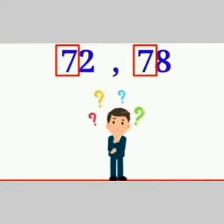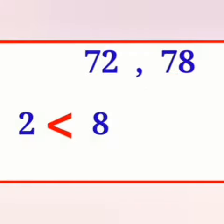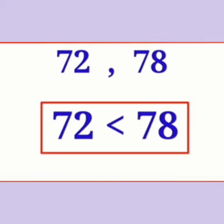If the tens digits are equal, then the number with the greater units digit is the greater number. Here, 2 units is less than 8 units. So, 72 is less than 78. Or we can say, 78 is greater than 72.